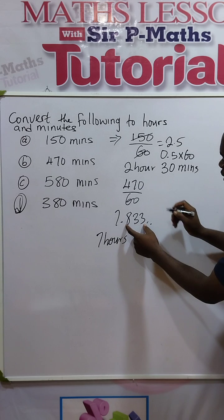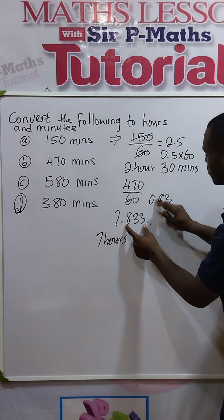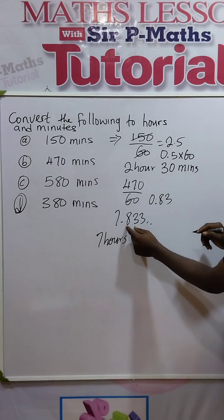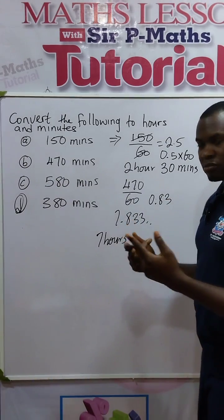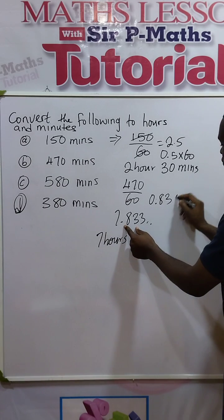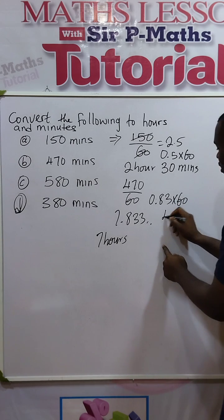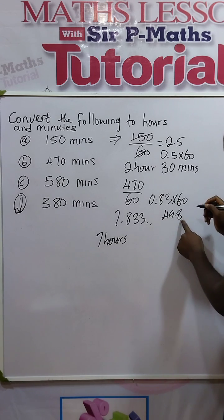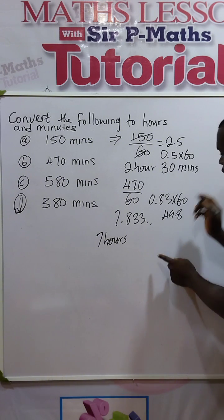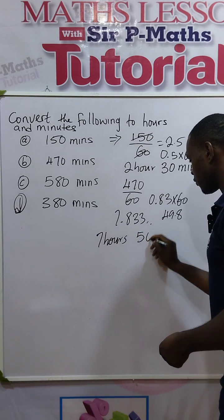Then multiply here, that is 0.83333. Take the first two decimals. For minutes, you take two decimals to solve minutes. Then multiply it by 60. If I multiply here, we have 49.8. Approximated to whole number, you have 50. So we have 50 minutes.